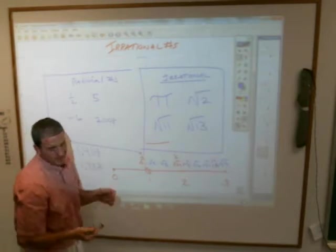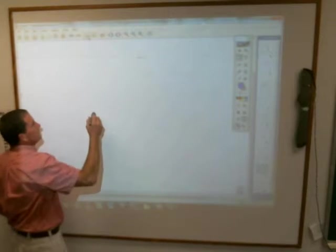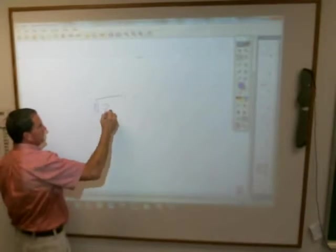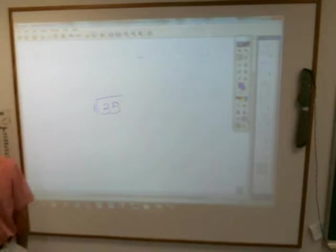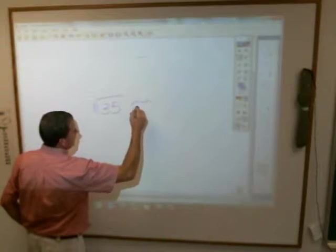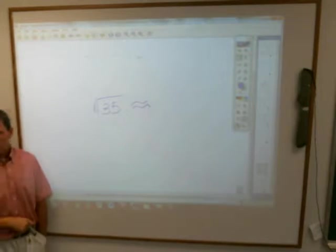So you should be able to throw out there a pretty legitimate guess as to what a square root is. For example, if I gave you the square root of 35, the square root of 35 is irrational, but you should be able to tell me that the square root of 35 is awful close to Elijah.